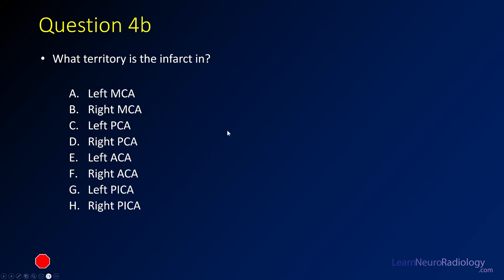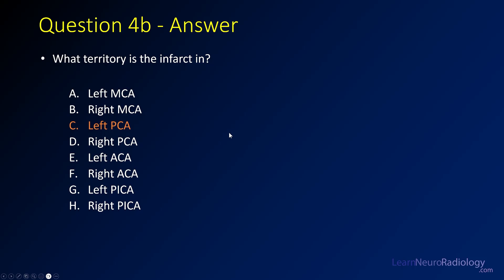Question 4b is: what territory is the infarct in? We saw the infarct was on the left and it's posterior, so that's going to be the left PCA. The infarct is from compression of the posterior cerebral artery against the tentorium, secondary to herniation of the temporal lobe.